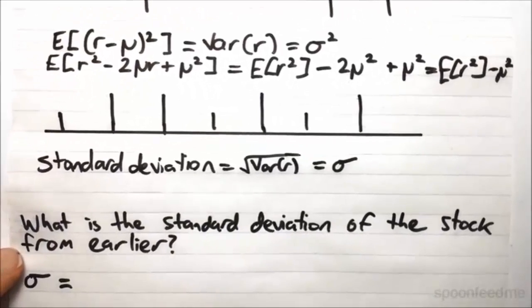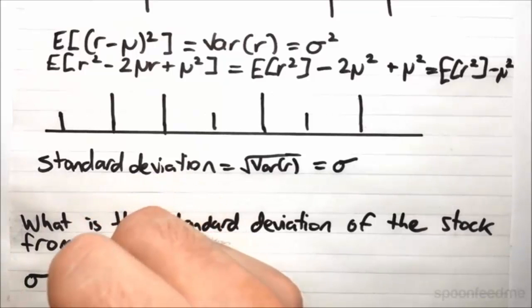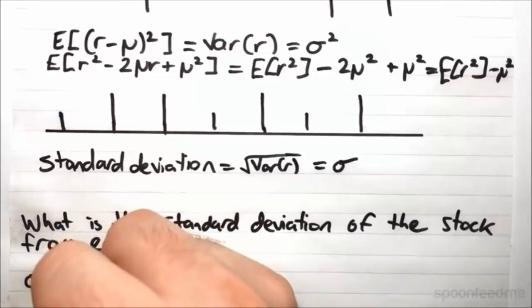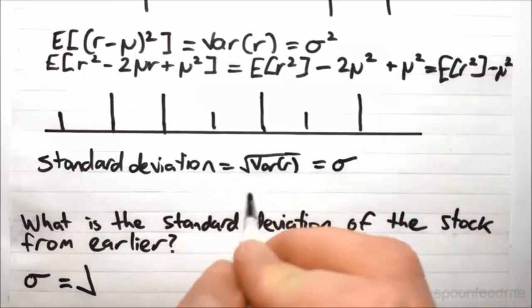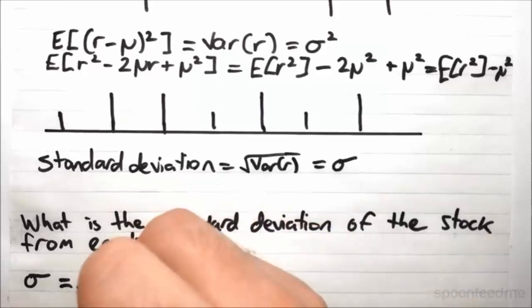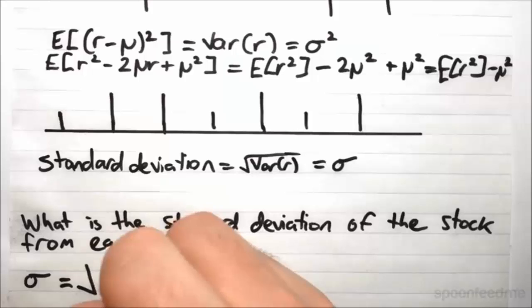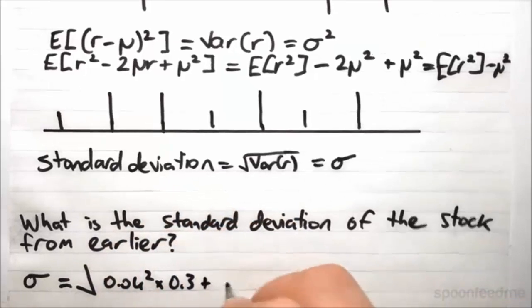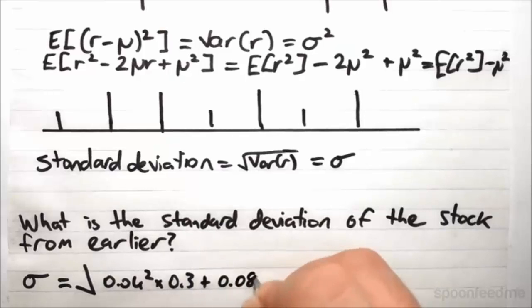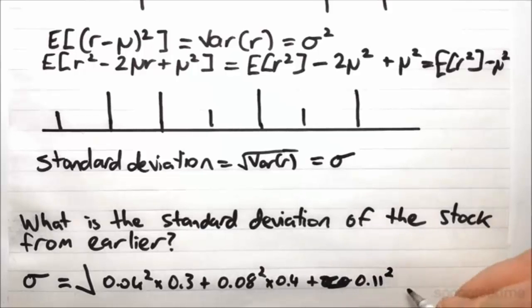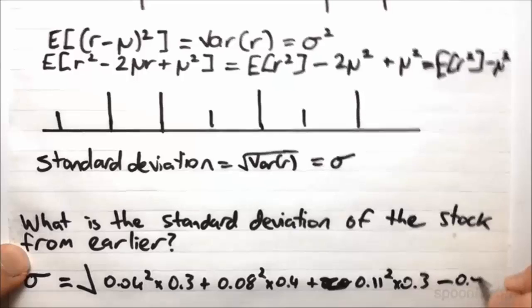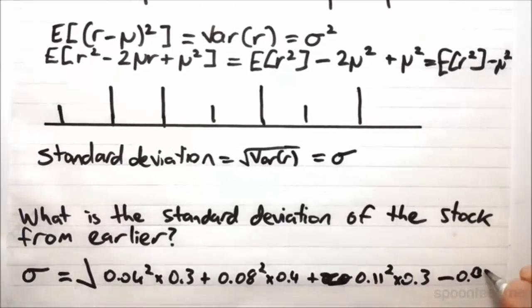So let's do an example. What is the standard deviation of the stock from earlier? So quite simply it's going to be the square root of E of R squared, means we're just taking those rates, squaring them, and then multiplying them by the probabilities. So it was 0.04 squared times 0.3, plus 0.08 squared times 0.4, plus 0.11 squared times 0.3, and then subtracting the mean squared. So 0.077 squared.